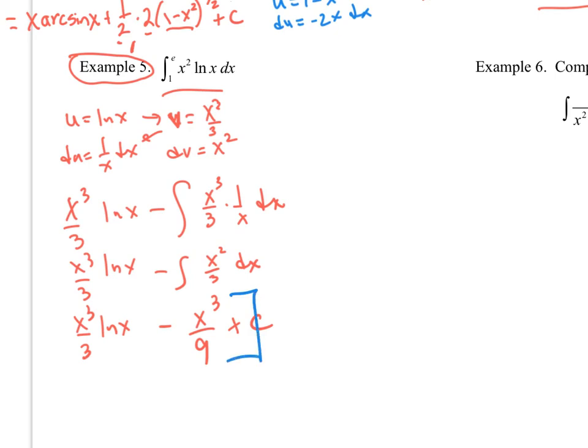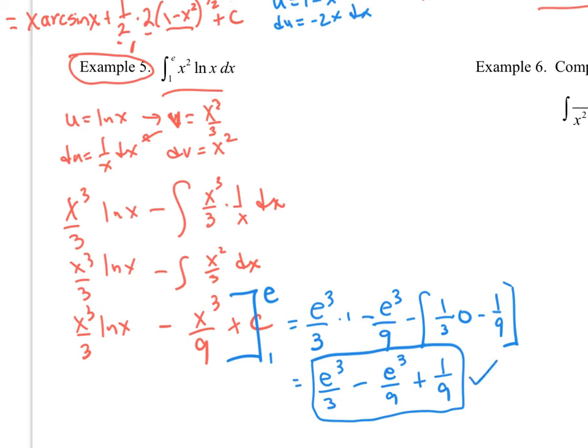Hold the phone, folks. We have a definite integral. I'm going to have to go 1 to e on this bad boy and plug in those values. I'm going to get e to the 3 over 3 ln e. Well, what is ln e? That's 1. Then minus e to the third over 9. And then minus, plugging in 1, I'm going to get 1 third ln of 1, which is 0 minus 1 ninth. That's the definite integral, plugging in the values.